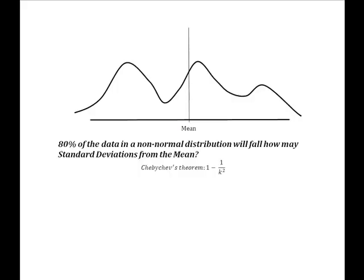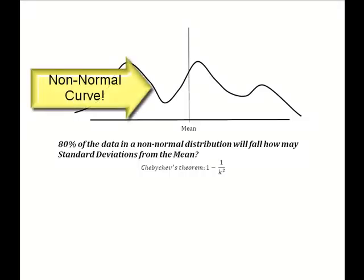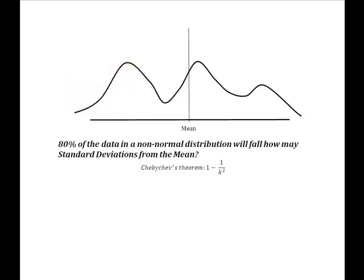So if I've collected data and plotted it and instead of that lovely mound bell-shaped curve, I get this curve that looks somewhat like the Andes or maybe the Appalachian Mountains. And I want to find out: 80% of the data in this distribution is going to fall how many standard deviations from the mean? Well, I automatically know because it's non-normal that the empirical rule is out. So what I have to do is apply Chebyshev's theorem, which says 80% of the data in a non-normal distribution will fall k standard deviations from the mean.